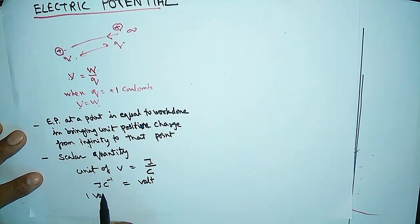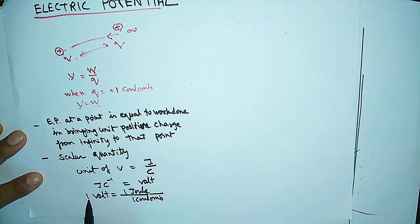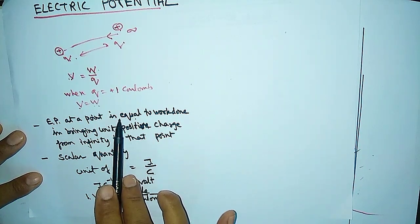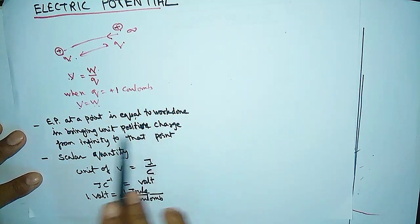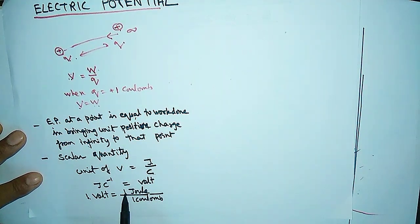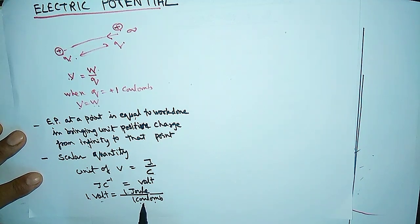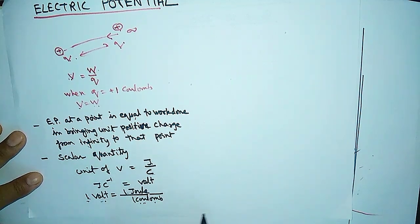We can define 1 volt as equal to 1 joule upon 1 coulomb. So the electric potential at a point is 1 volt when 1 joule of work is done in bringing 1 coulomb of charge from infinity to that point. This is the definition of 1 volt electric potential.